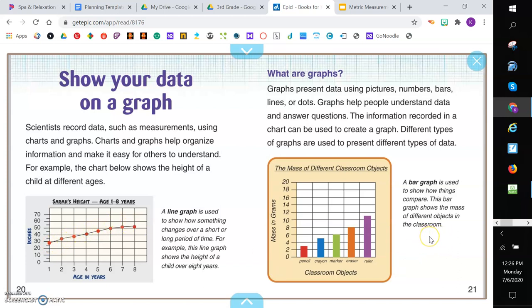A bar graph is used to show how things compare. This bar graph shows the mass of different objects in the room. So it shows the different mass of these items and the longer the bar, the more mass it has.